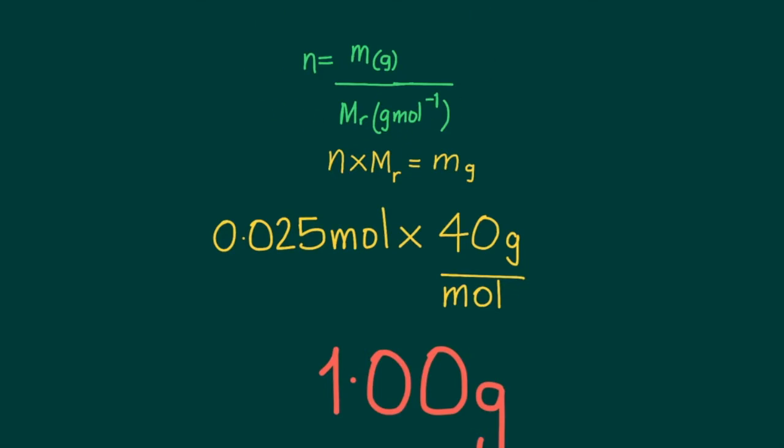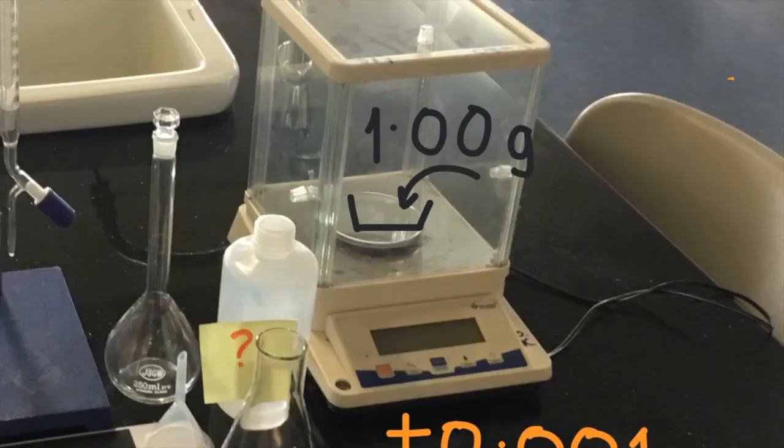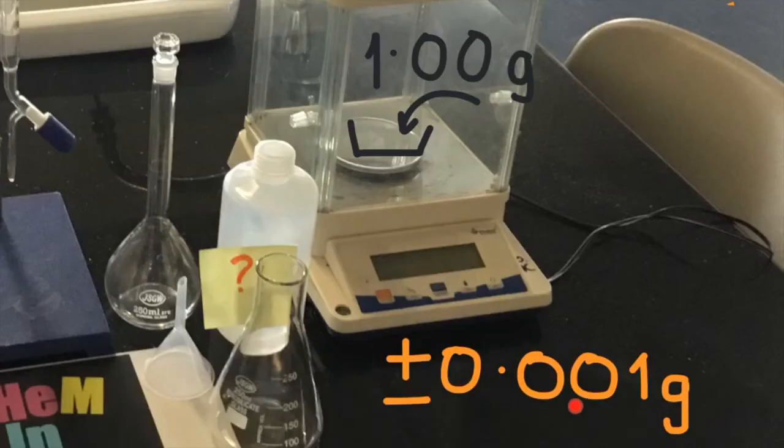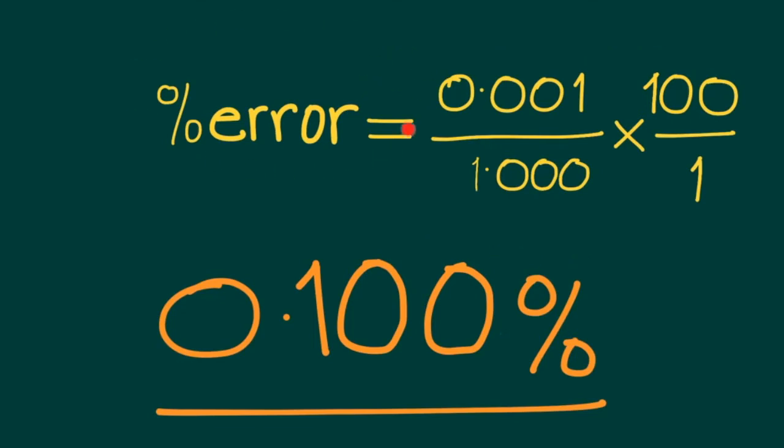The student then turned on the analytical balance, placed a weighing bottle on the balance pan, hit the tare button, and then loaded 1.00g of sodium hydroxide. This mass has an uncertainty of 0.001g. The percentage of error associated with this mass is 0.001g divided by 1.000g, which comes to 0.100%.